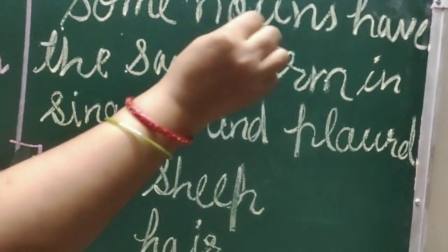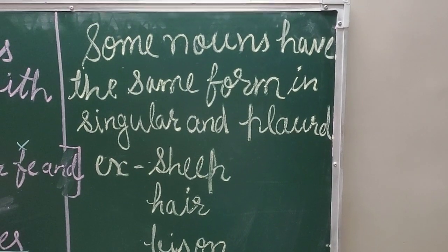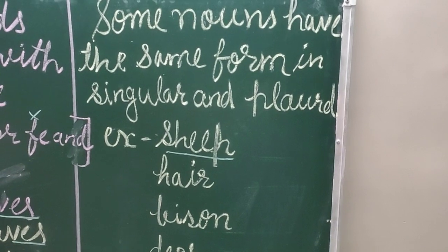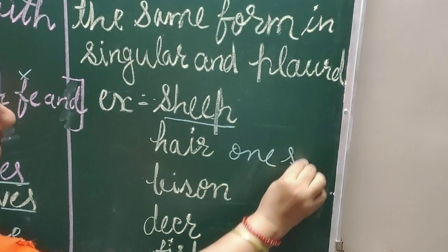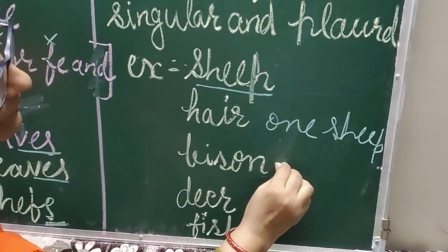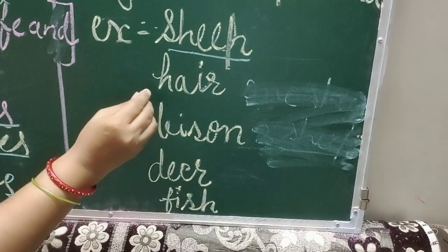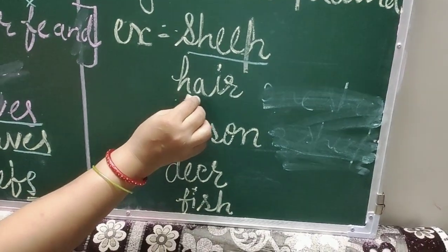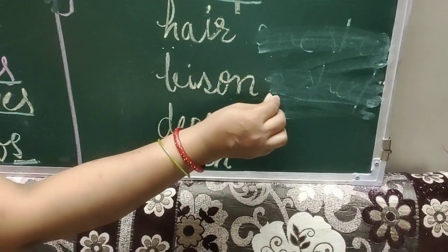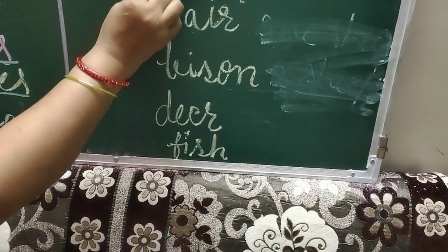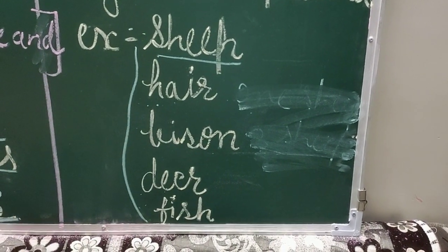Another rule, children — some nouns have the same form in singular and plural. For example, sheep may be singular or sheep may be plural. To know whether there is one sheep or many sheep, we can write their number — one sheep or three sheep. In the same way, here is an uncountable noun — we cannot count it, so the singular and plural form are the same. Bison is also the same in singular and plural form. Deer and fish also follow the same rule.